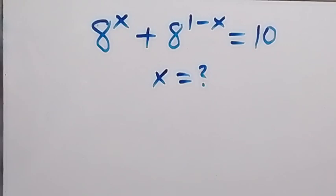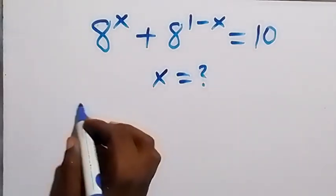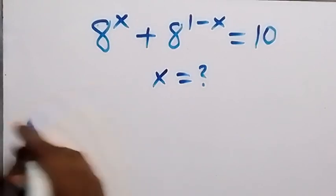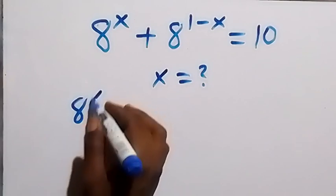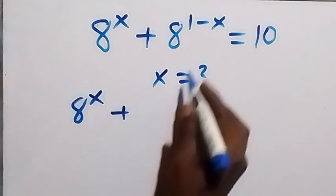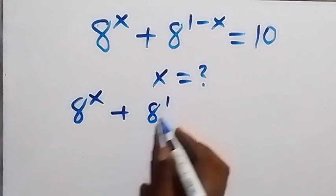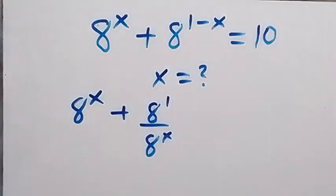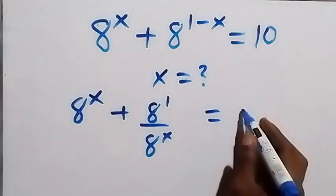Here finding the value of x. From here we can write this as 8 raised to power x. Then plus, here we can separate it and that will be 8 raised to power 1 over 8 raised to power x, from the law of indices, which is equal to 10.